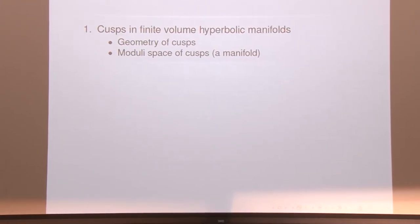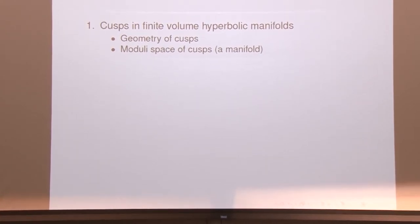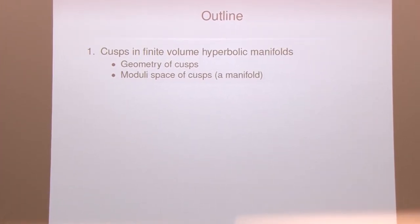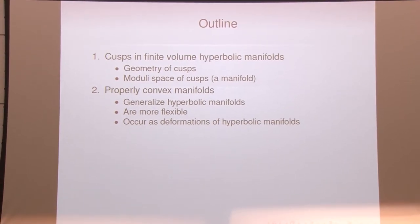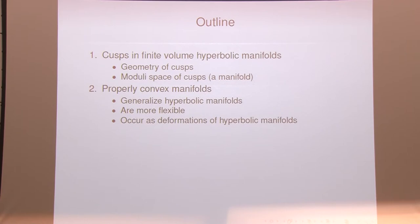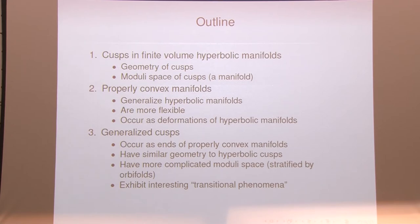The talk is going to have three main parts. First, we'll go over what cusps of finite volume hyperbolic manifolds look like — in particular, their geometry and their moduli space, which turns out to be nicely behaved. Next, we'll do a quick introduction to properly convex manifolds, which are a nice generalization of hyperbolic manifolds, but because of a lack of Mostow rigidity, they're much more flexible. Finally, we'll introduce generalized cusps and see that in many ways they're similar to cusps of finite volume hyperbolic manifolds, but they have a more complicated moduli space and some interesting transitional phenomena.